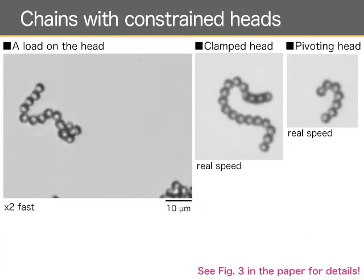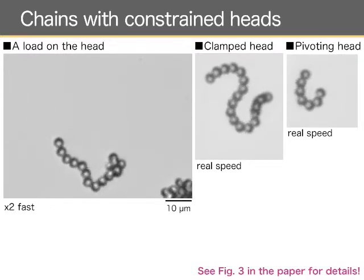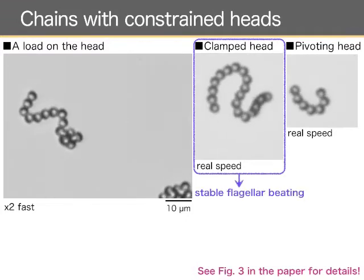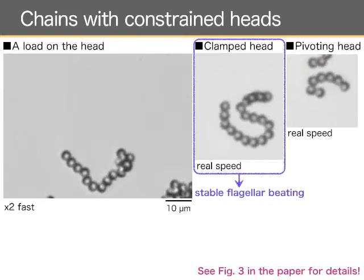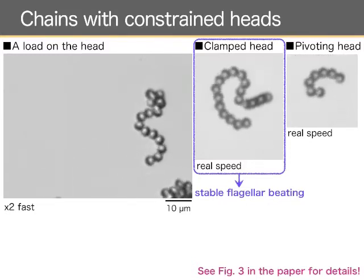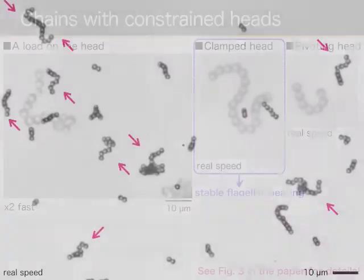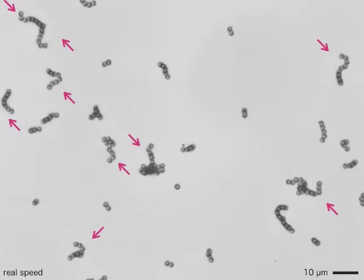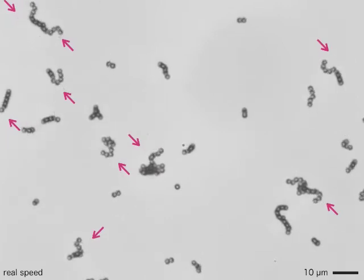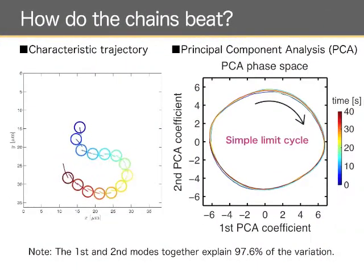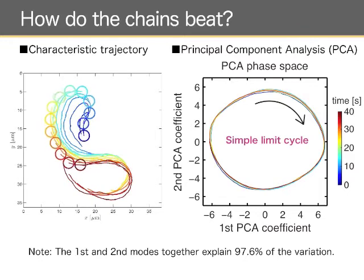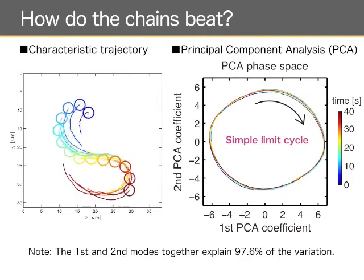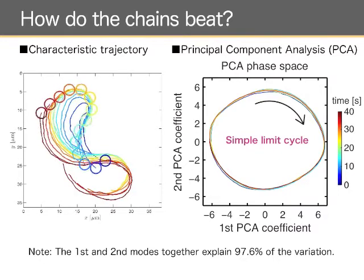Depending on the constraints imposed on their heads, the chains exhibit oscillatory or rotary motions. In particular, when the foremost particles of the chain are both positionally and orientationally fixed, the chain exhibits stable flagella-like beating behavior. Such beating behavior can be observed when the foremost particles are tethered on the bottom electrode or when they hit obstacles or aggregates of immobile particles. The beating chains exhibit characteristic trajectories in real space. However, principal component analysis has shown that they can be interpreted as quite simple oscillations between the first and second principal components.